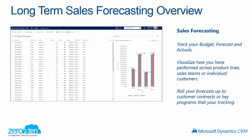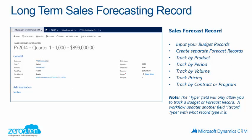You have the ability to roll up your forecast to customer contracts or key programs that you may be running. The actual sales forecast record is comprised of a few different fields. It allows you to input your budget records, kept separate from your forecast records. You can track by product, by period, as well as by volume and pricing. You also have the ability to attach this forecast to a contract or a program in CRM.